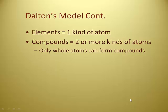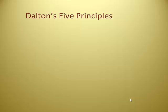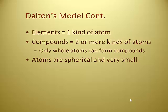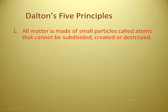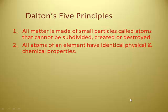What Dalton comes up with is: elements are one kind of atom, compounds are made of two or more kinds of atoms, and only whole atoms can form compounds — you can't split an atom in half. Atoms are spherical and very small. Along with his model he comes up with five principles. First: all matter is made of small particles called atoms that can't be subdivided, created, or destroyed — Democritus's idea right there.